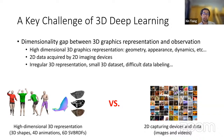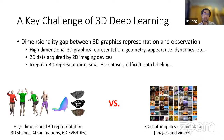A key challenge of 3D deep learning is the dimensional gap between the 3D representation and its observation. The 3D graphics representations used to model geometry, appearance, and the dynamics of the 3D world are always high dimensional — such as 3D geometry, six-dimensional surface reflectance data, or 4D deformation sequences. On the other side, imaging devices are always 2D or even 1D, and the data we can directly acquire is 2D projections of these high-dimensional functions.